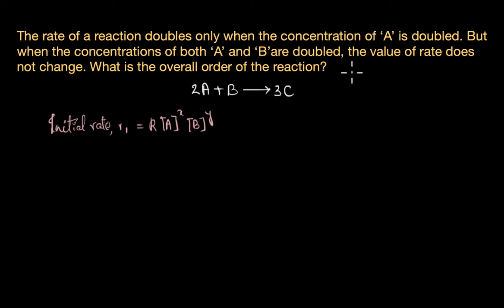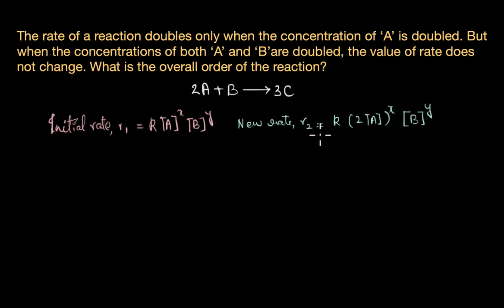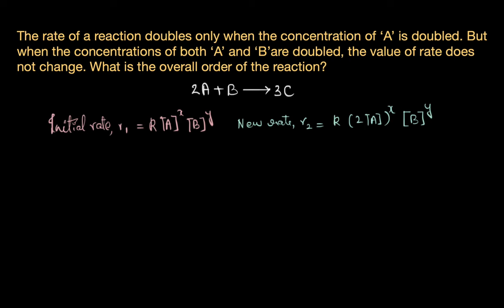Let's look at the first scenario where the concentration of A is doubled keeping the concentration of B constant. In this case R2 is equal to K into 2A whole power X times B power Y — so basically the concentration of A is doubled here. We also know from the question that when the concentration of A doubles the rate of the reaction doubles, which means this new rate is twice the initial rate, that is R2 is equal to 2 times R1.